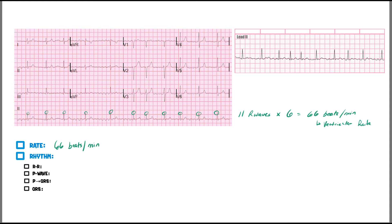Next, we determine the rhythm. Is the R-to-R interval the same? I can already tell just by looking that it is not. Look at these two right here — this is about four boxes, then this one is about two and a quarter boxes. Over here it's five boxes, then six boxes. You don't have to count every single box; just stepping back and looking at the rhythm strip, you can clearly tell this is not regular.